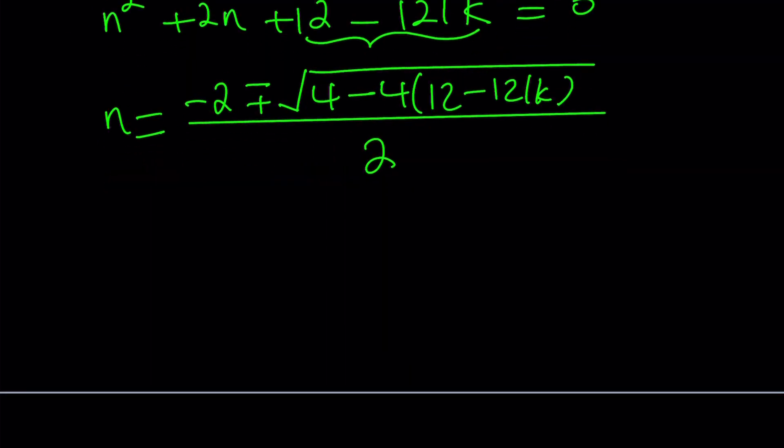Awesome. Let's simplify this a little bit. n equals negative 2 plus minus the square root of, I've got 4 minus 48. That's going to give me negative 44. And then I have negative 4 times negative 121k, which is going to be 484k minus 44.